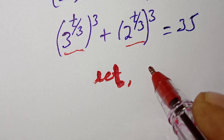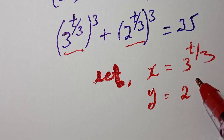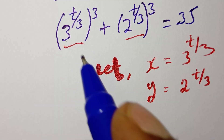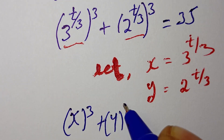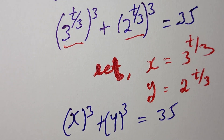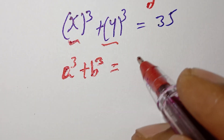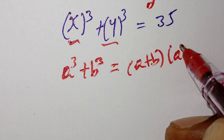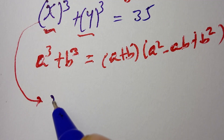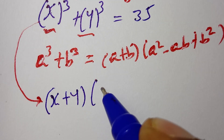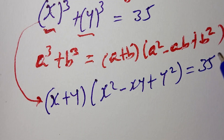Let x equal 3 to the power of t over 3, and y equal 2 to the power of t over 3. So this becomes x cubed plus y cubed, which equals 35. And we know that a cubed plus b cubed is the same as a plus b times a squared minus ab plus b squared. Based on this, the expression becomes x plus y times x squared minus xy plus y squared equals 35.